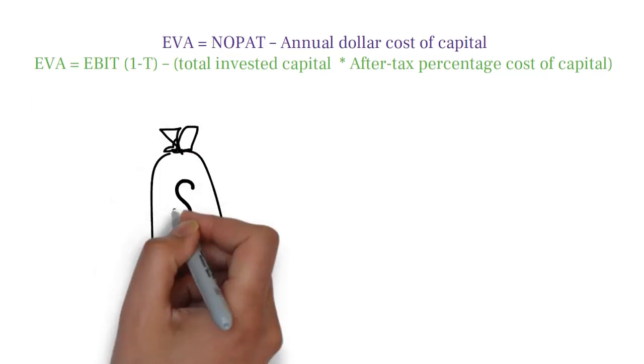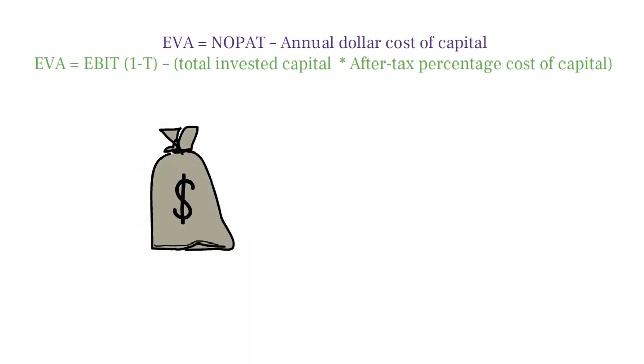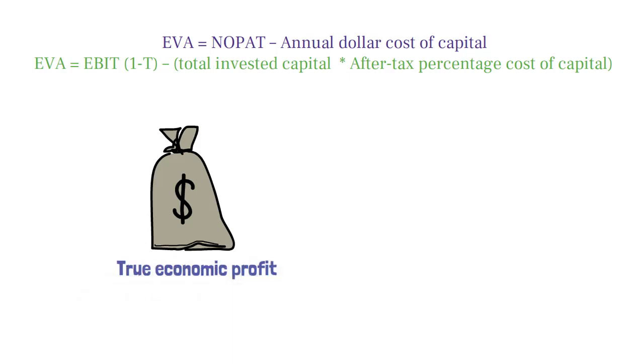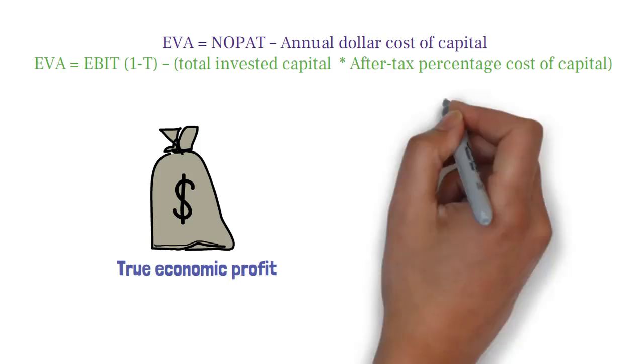EVA is an estimate of a business's true economic profit for a given year, and it often differs sharply from accounting net income.